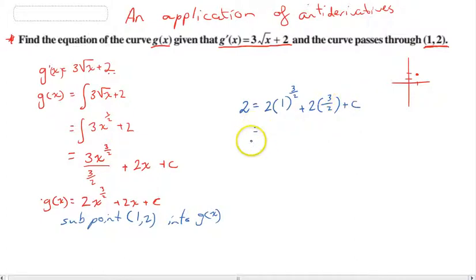And now we just need to solve that for c. Now you can type a lot of this into your calculator, but we should know most of it. 2 = 2 times 1 to the power of 3/2. 1 to the power of 3/2 is still going to be 1. 1 raised to any power is 1. So 2 times 1 is 2, plus 2 times... which is going to be 3, plus c.